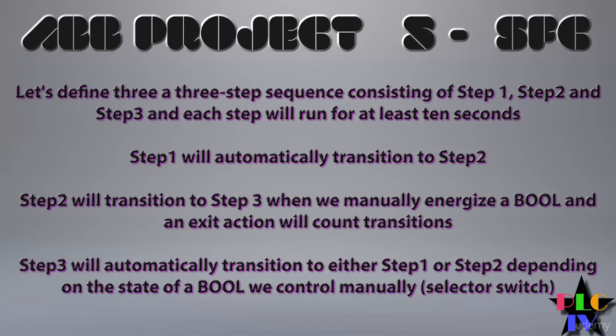Once we're in step two, we want to stay there for at least ten seconds, but we don't want to transition to step three until we manually close a bool. So we're going to have a bool, which is going to represent maybe a switch or a button or something like that. And until we make that true, we're not going to go into step three.